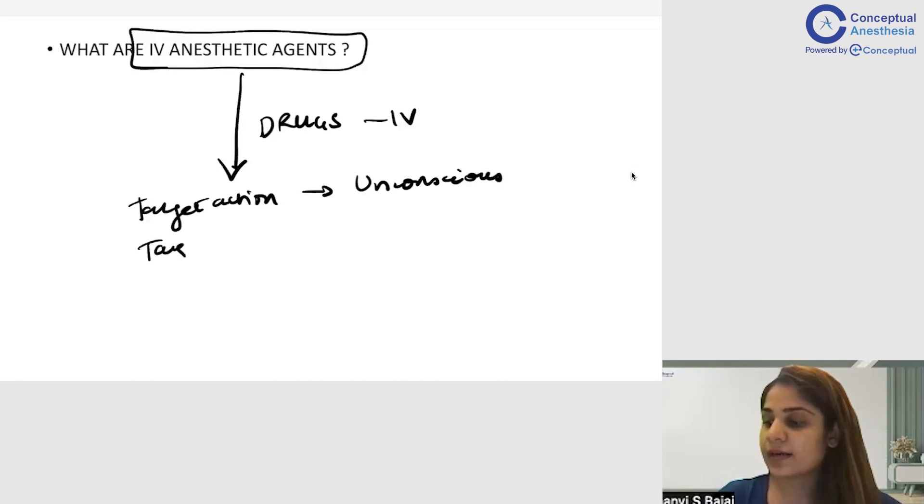So what will be our target site of action in this case? It will be the brain. So you will tell your teacher in this manner: IV anesthetic agents are drugs given intravenously that produce unconsciousness in the patient.